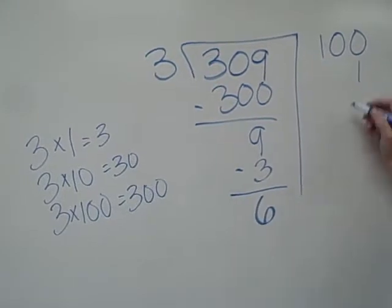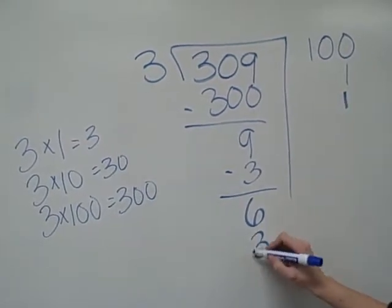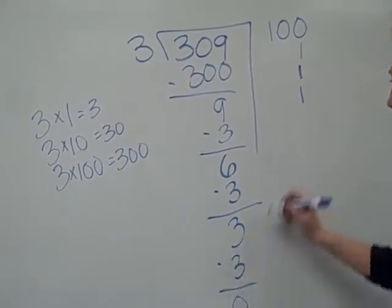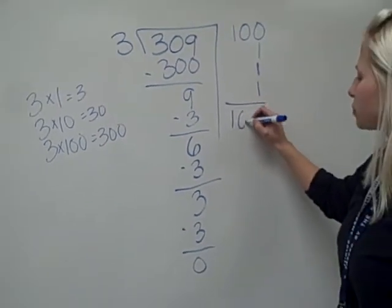Same thing, we're going to do 3 times 1, 3 times 1 is 3, subtract you get 3. 3 times 1 is 3, subtract, we don't have any left over, our answer is 103.